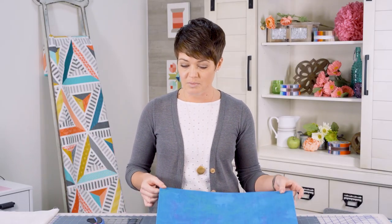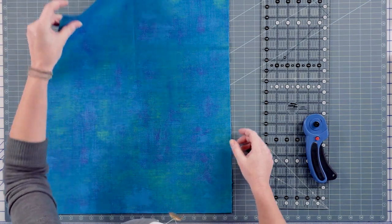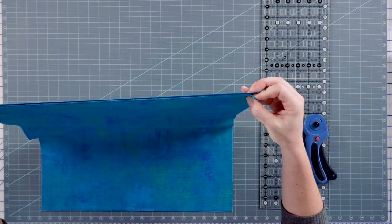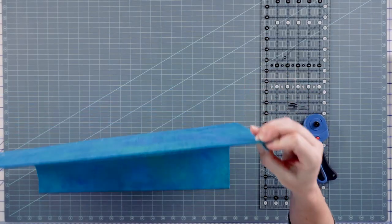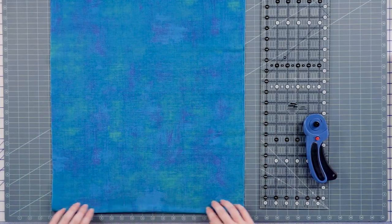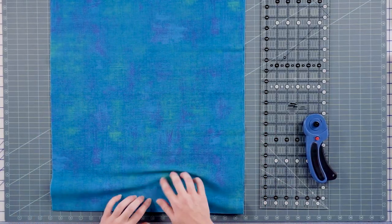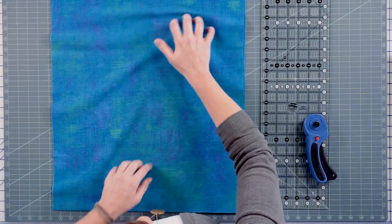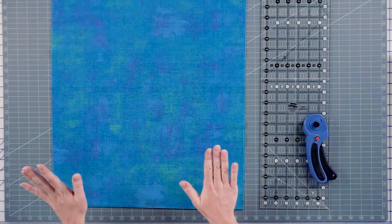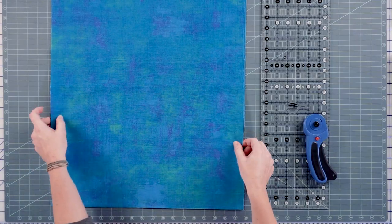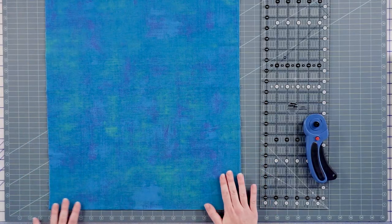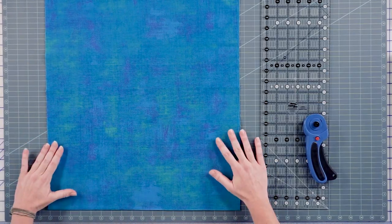What I have here is just a half-yard piece of fabric, and I'm going to determine that my salvages meet. I really want to make sure that they are parallel with each other, and in doing so, it's nice and flat. I press really well before cutting. So I've got my salvages, I've got my fold line, it looks very straight here, and now I'm going to do a clean-up cut.